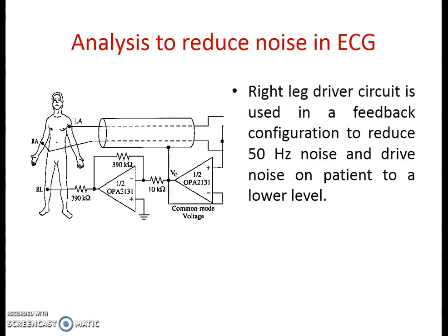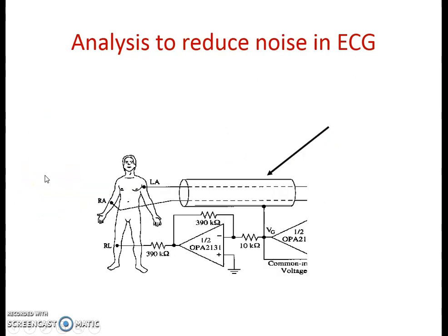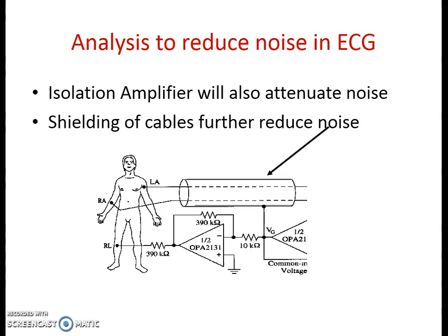The second way to deal with common mode signal is by using a right leg driver. In this circuit, part of the signal is inverted — the common mode voltage first goes to a follower and then to an inverter. Part of the signal is taken back through the follower stage and through the inverter sent back to the patient. By this particular arrangement, we are providing feedback to the patient so that the noise level at the patient can be reduced. Using the isolation amplifier will also help reduce the noise level. In addition, shielding of cables also helps to reduce the noise further.